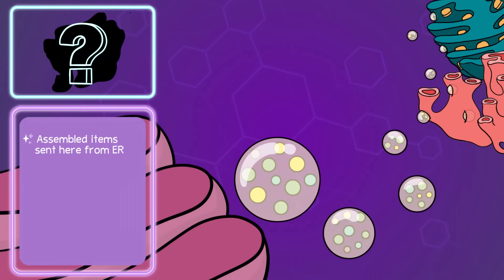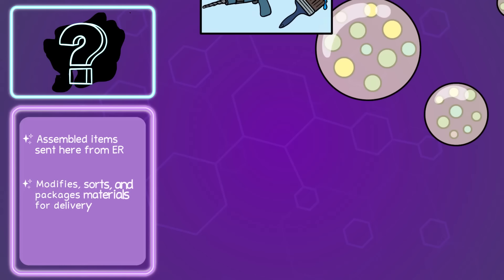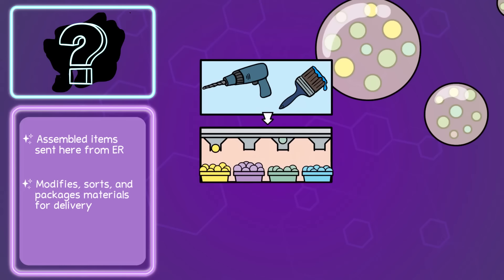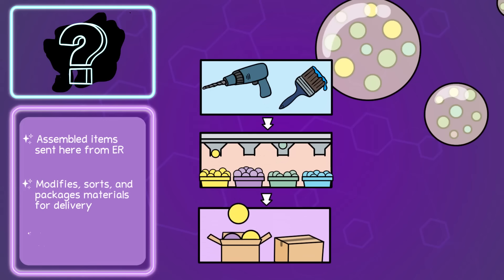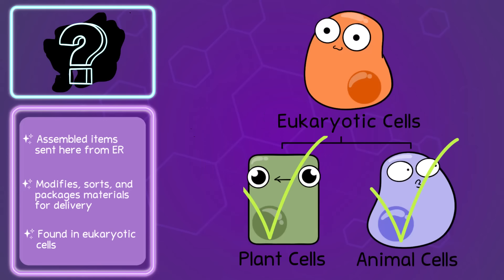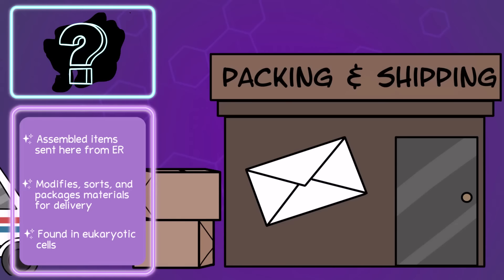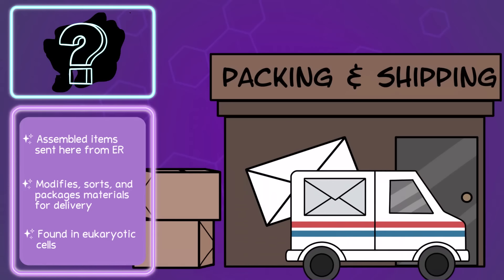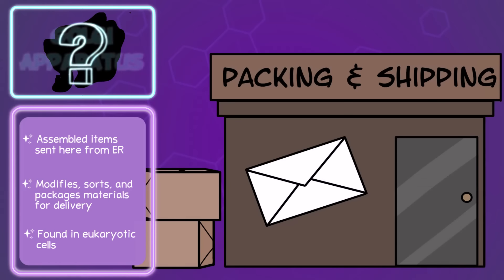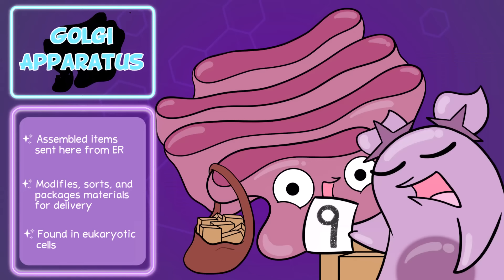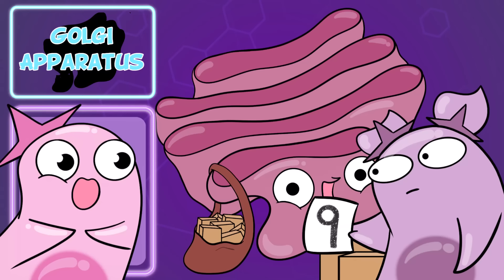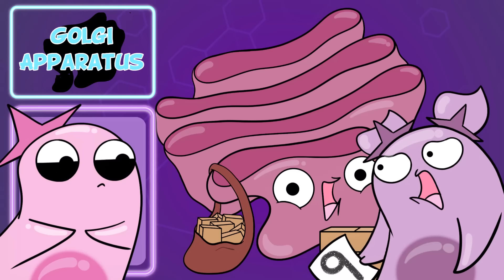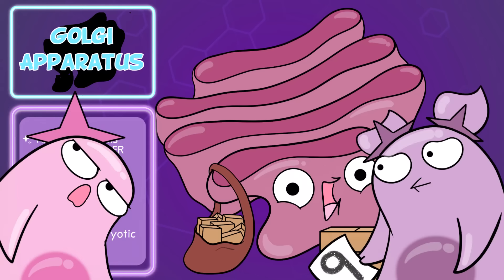So the ER can send assembled items to this next structure. This structure will then modify, sort, and package materials for delivery. It's found in eukaryotic cells, both plant and animal cells, and it's a lot like a packaging facility. It's the Golgi apparatus. 9 out of 10 — it's just fun to say. Golgi was actually named after a scientist. Okay, science first, please. Then you can do history. Fine.